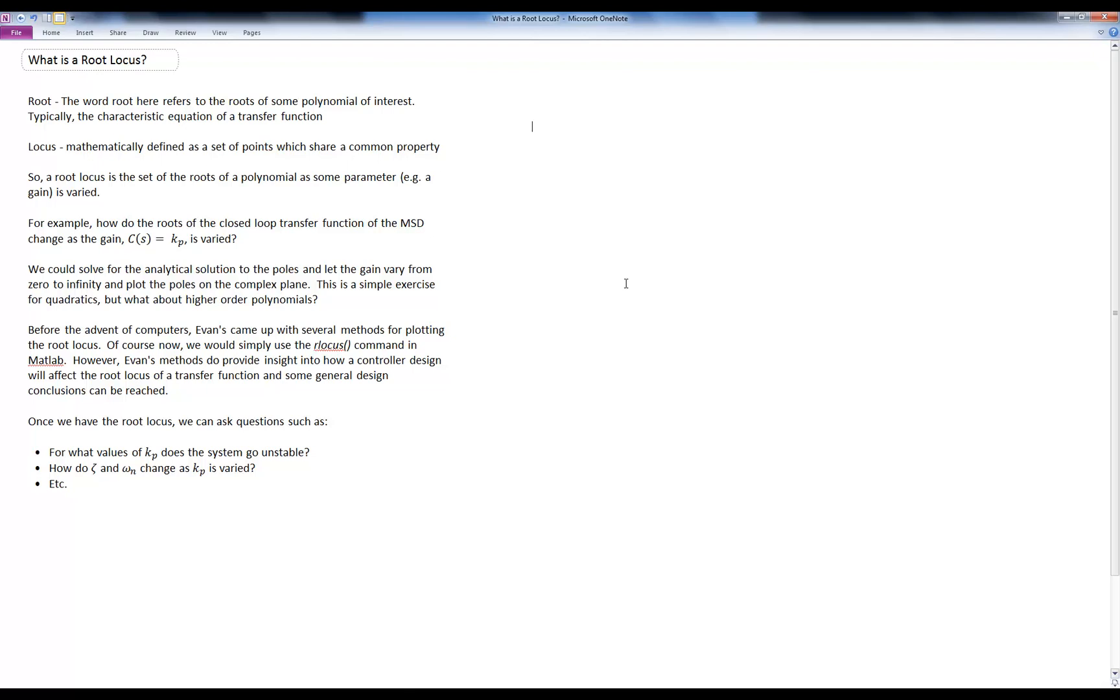Once we have the root locus, we can ask questions such as: for what values of kp does the system go unstable? How do zeta and omega n change as kp is varied? Etc.